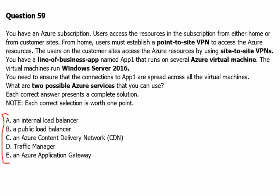It can distribute traffic based on various algorithms such as round robin, least connections, and IP hash. Further, the internal load balancer works on layer 4 — the transport layer — and can distribute traffic within a virtual network. So that is a correct solution in this case.